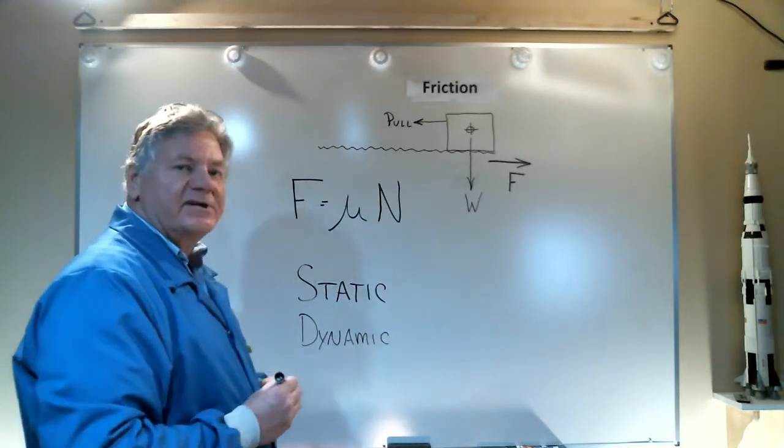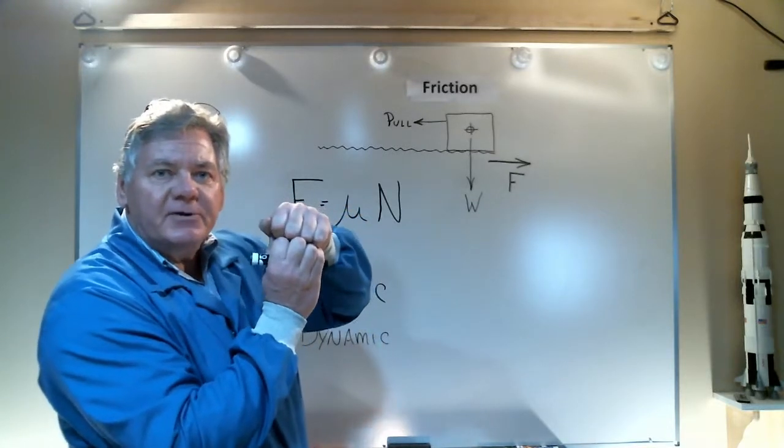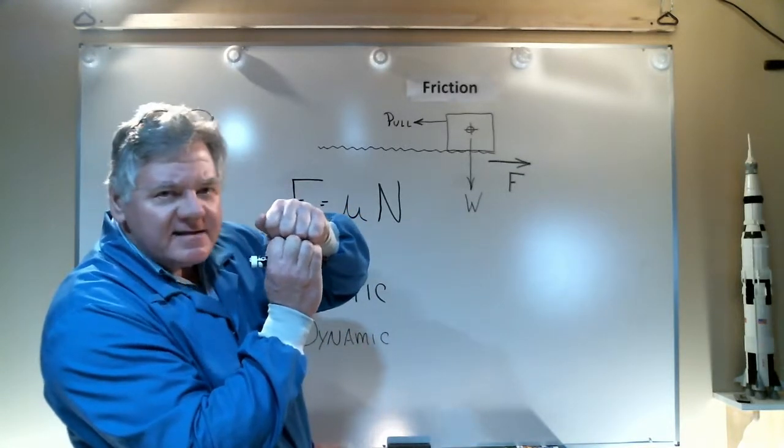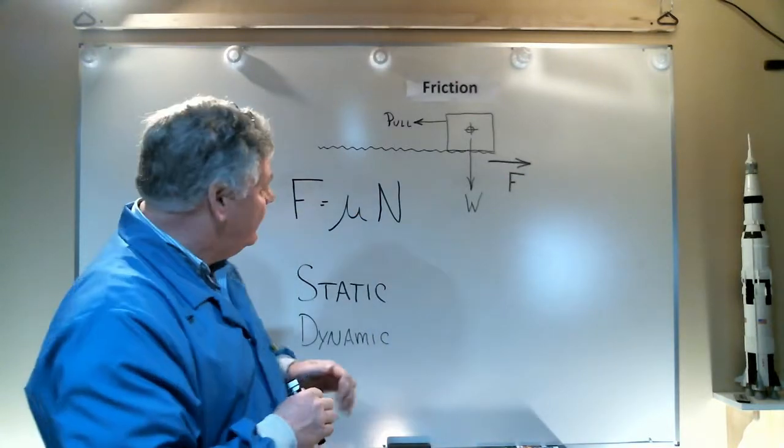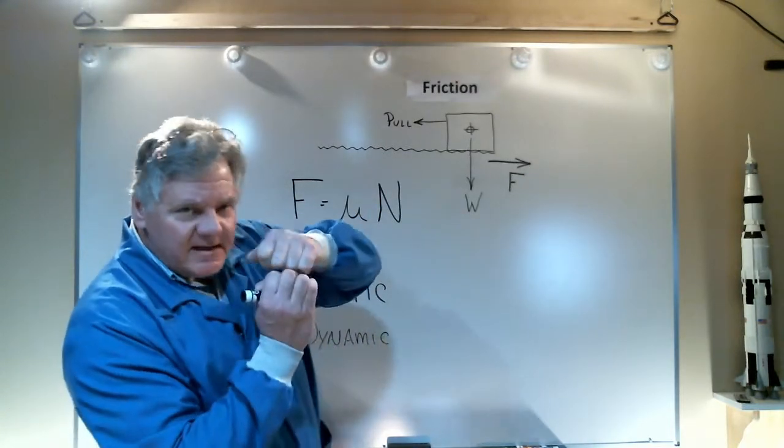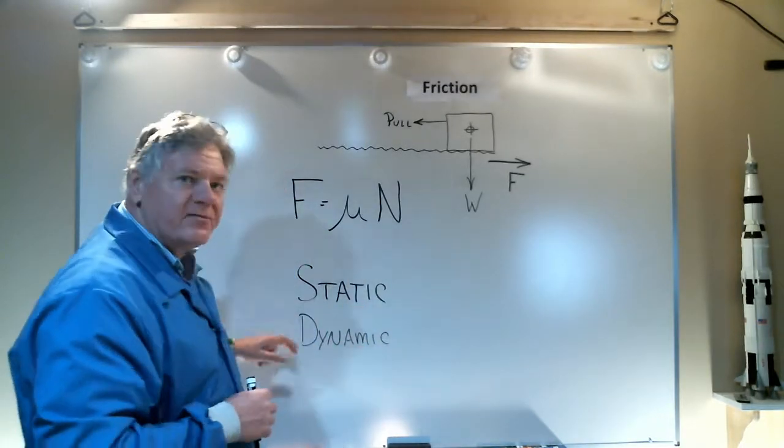Static friction is when I first start trying to get the object to move. There's a certain amount of surface adhesion between the object and the surface. It takes a little more force to break that adhesion to get the object moving. When the object starts moving, it sort of skips across the surface and takes less force to keep the object moving—that's the dynamic friction.